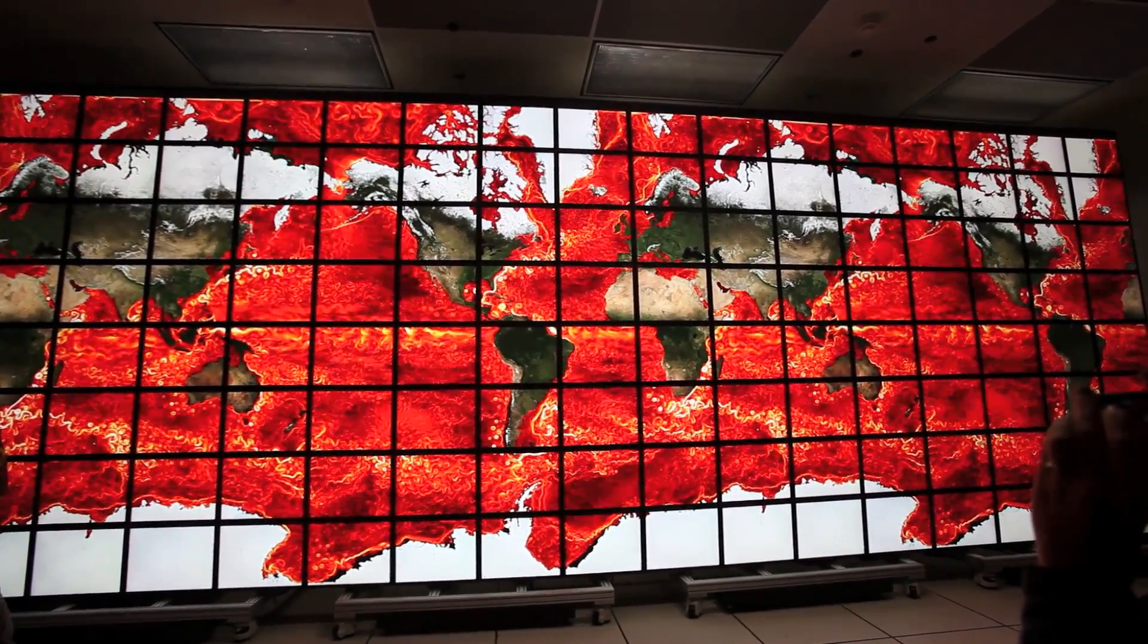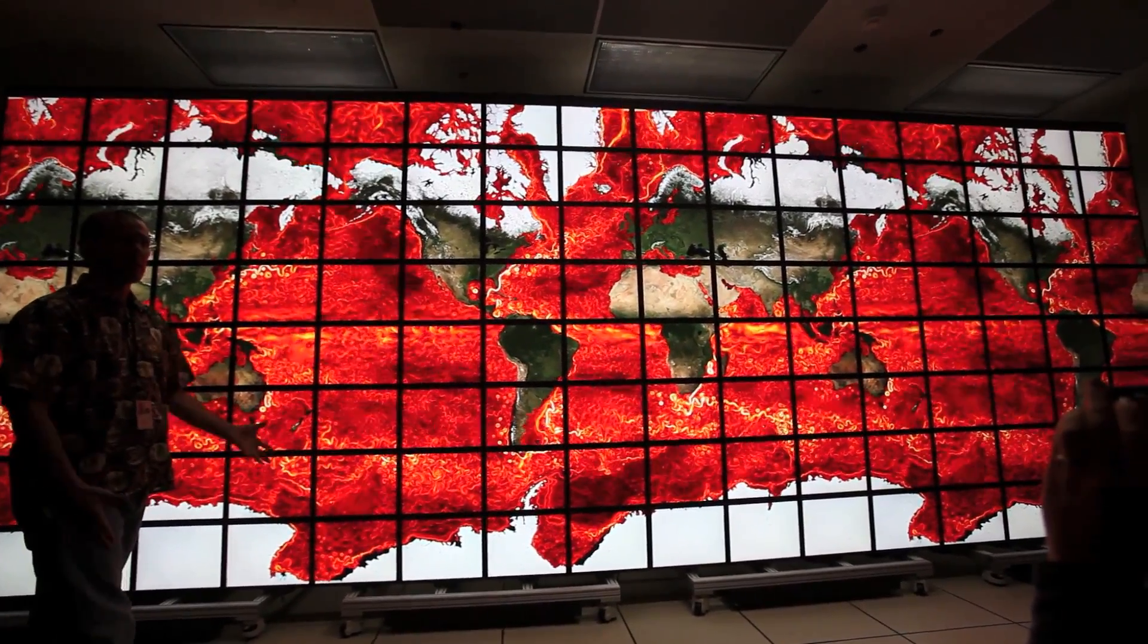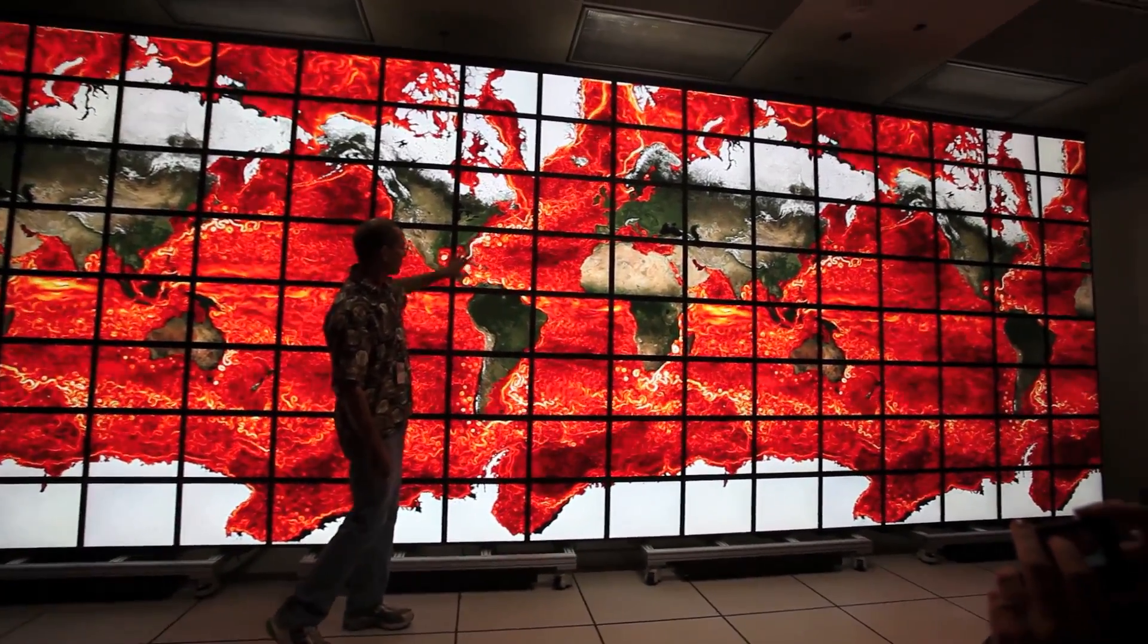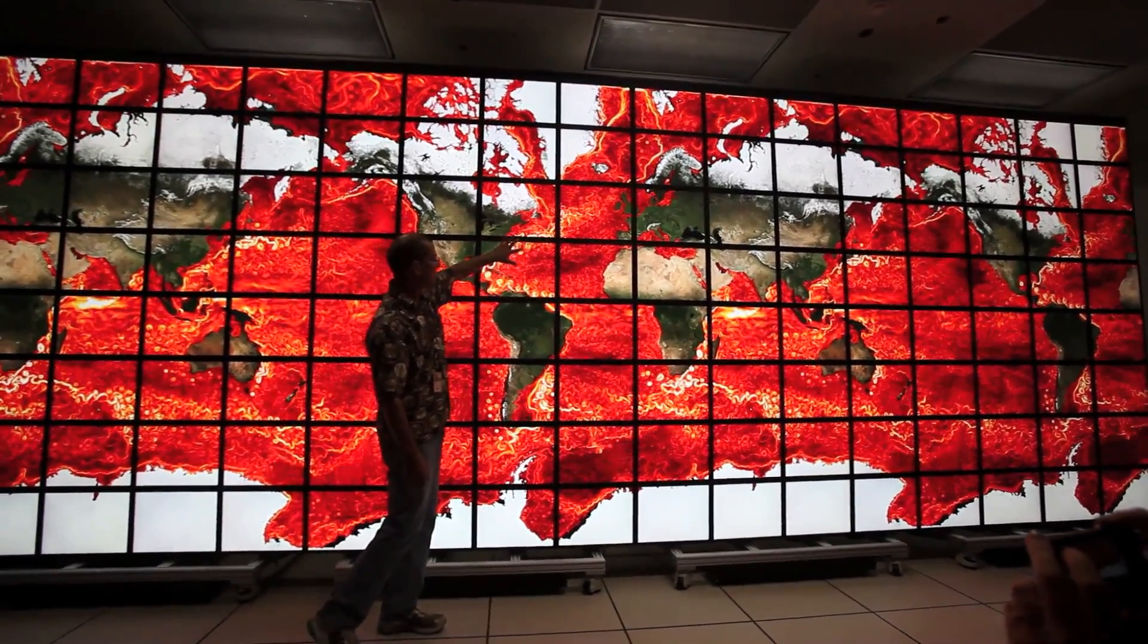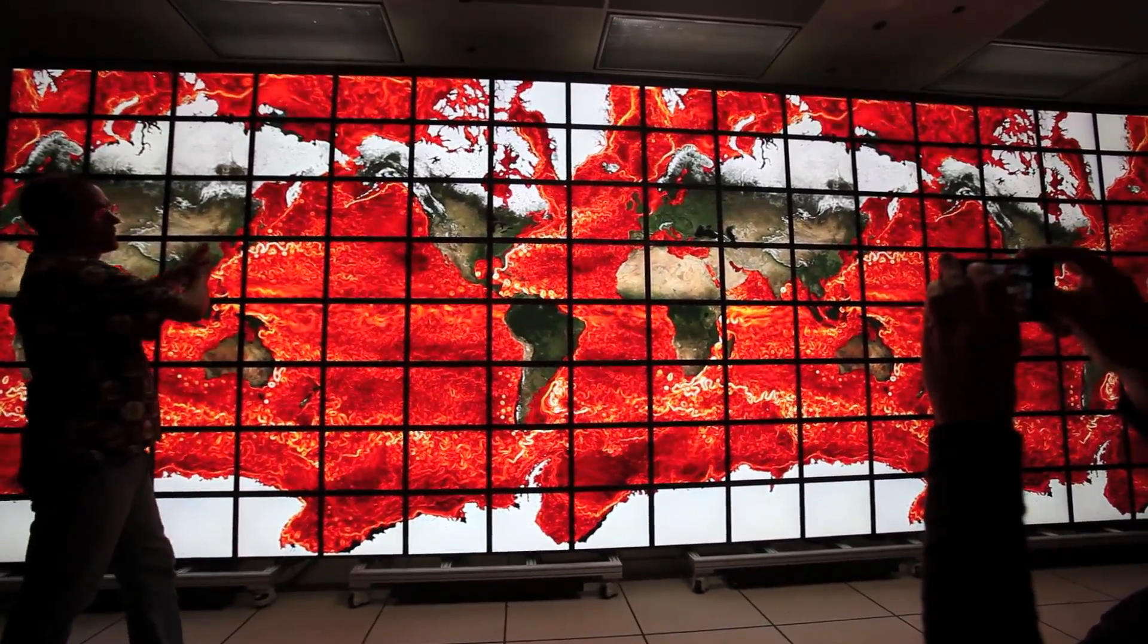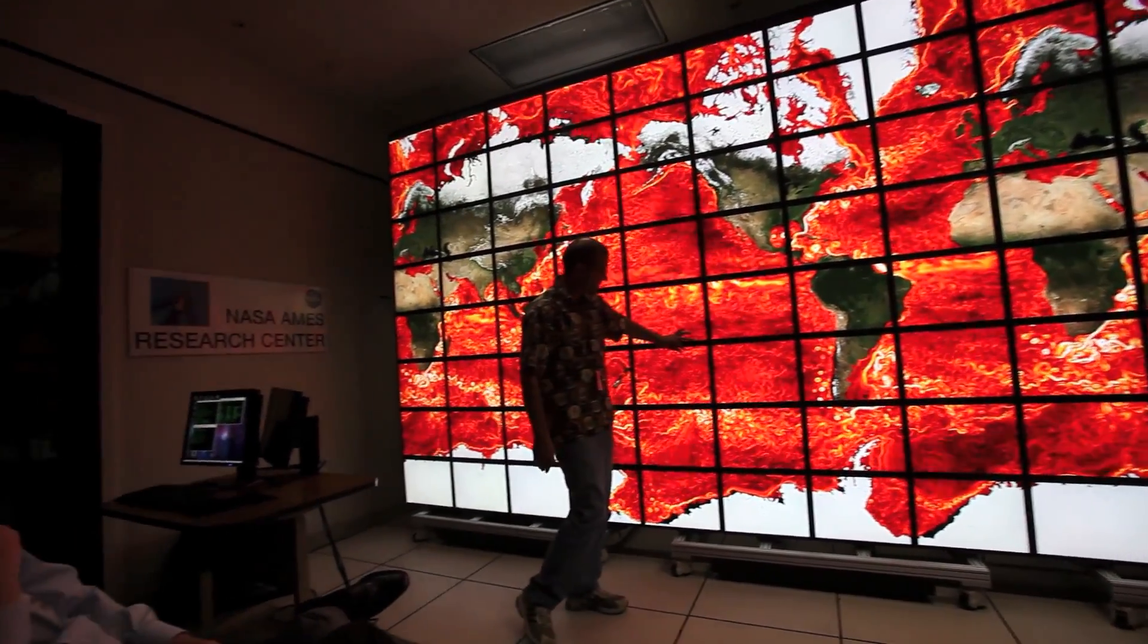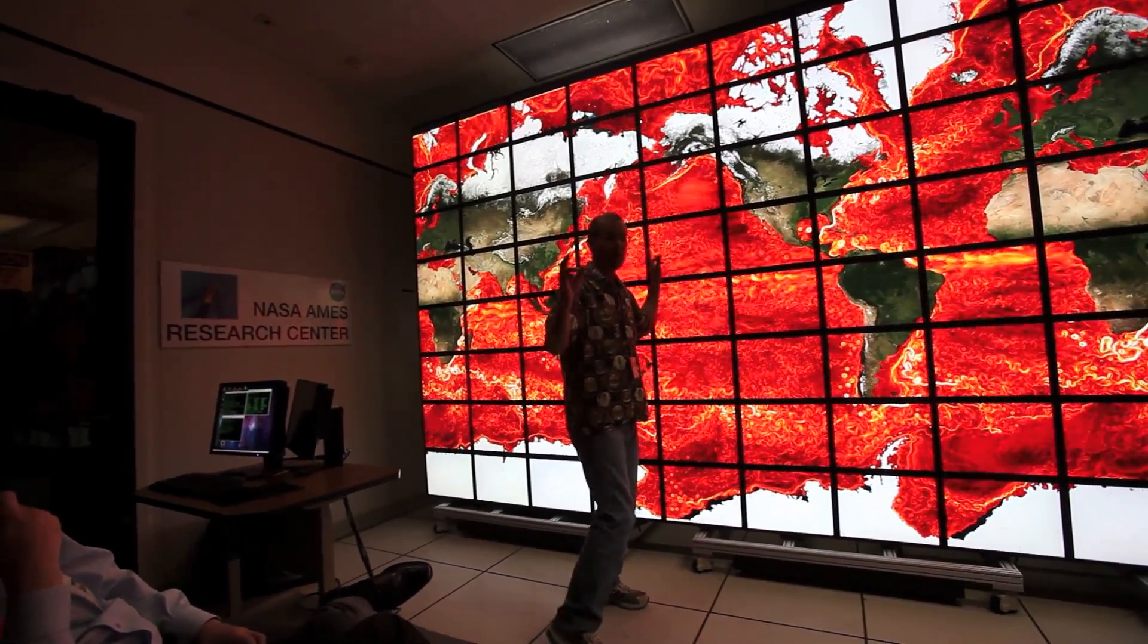So this is a big calculation. This is a petabyte scale calculation. Here's the Gulf Stream, shedding these mesoscale eddies. In general, you see that the flow field is dominated by these kind of curled up, narrow current streams. This is the famous mesoscale eddy field.